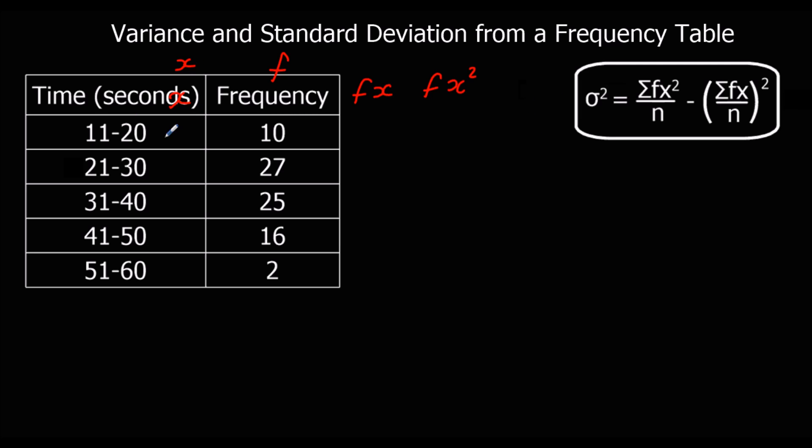So if we look at the midpoints first, the midpoint of 11 and 20 would be 15.5. We have 25.5, 35.5, 45.5, and 55.5. If you're not sure what the midpoint is, you can add the two bounds up, so 11 plus 20 and half it. Add them both up and divide by 2 will give you the midpoint.